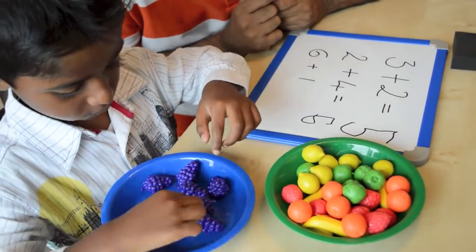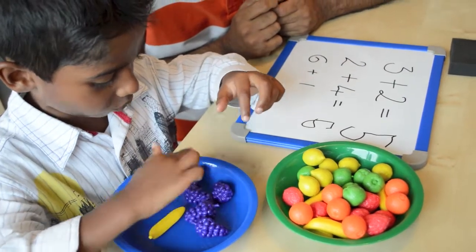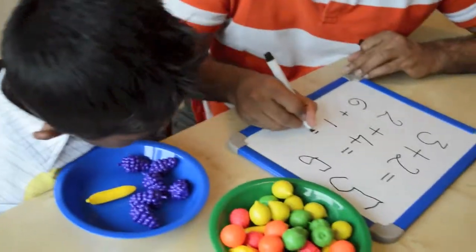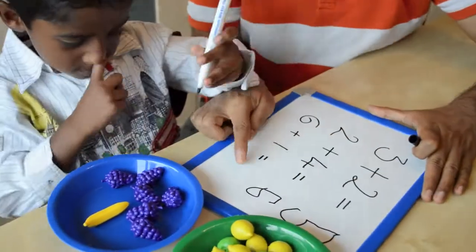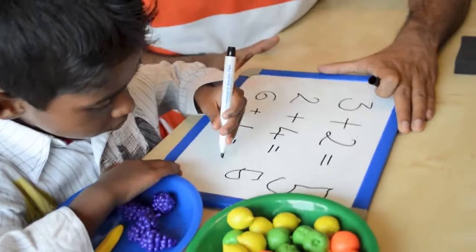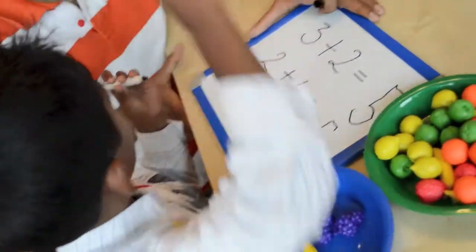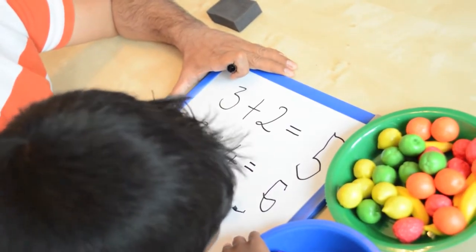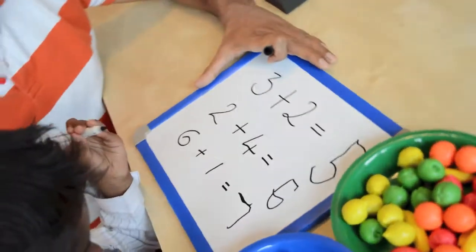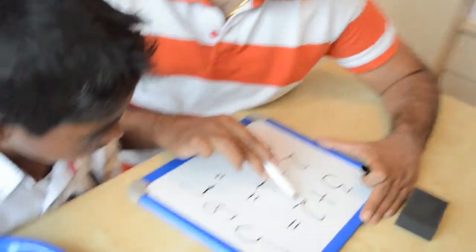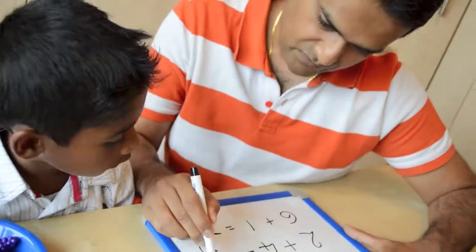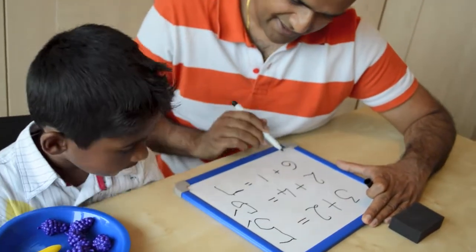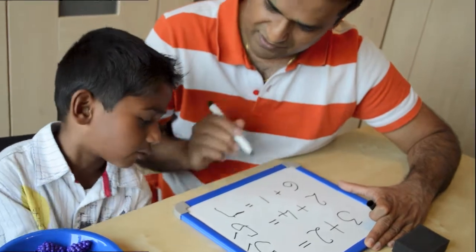Now count everything up. One, two, three, four, five, six, seven. Would you like to write the answer down next to that question? Number seven there. Wonderful. So, shall I tick your answers? Three plus two equals five. Well done. Two plus four equals six. Well done. And six plus one equals seven. Exactly.